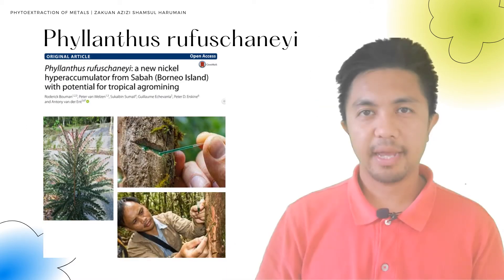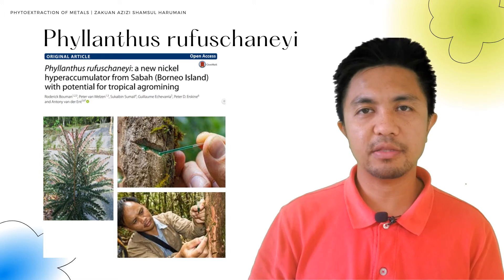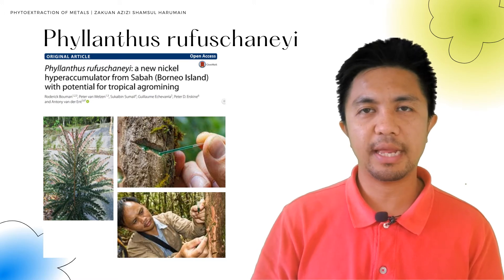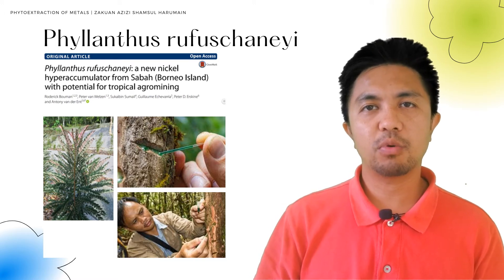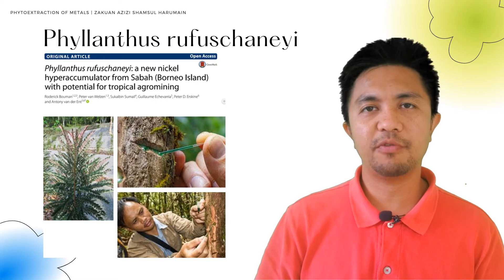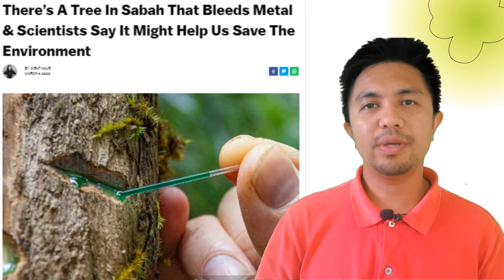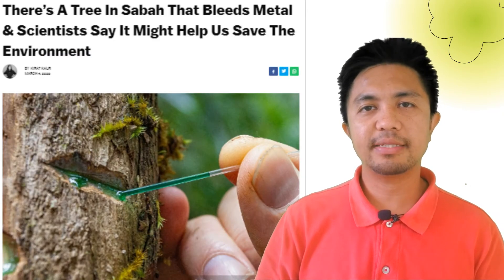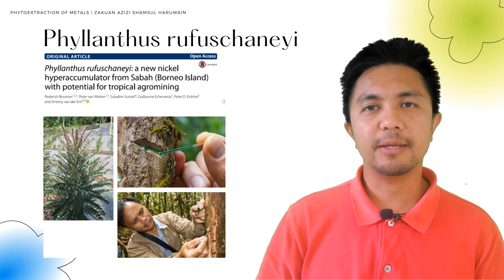An example of a nickel hyper accumulator plant is Phialanthus rufus, a tropical plant locally grown on ultramafic serpentine soil in Sabah, Malaysia, which was recently discovered by Dr. Anthony Vanderan and his team back in 2015.